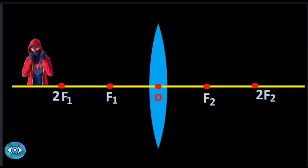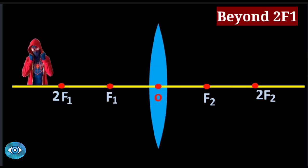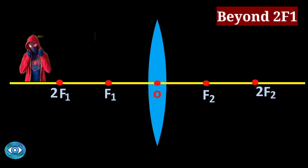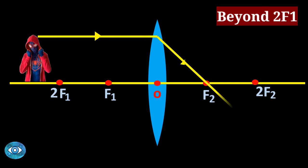Case two: the object is a Spider-Man figure placed beyond 2f1. We consider rays from the top of the object and choose any two light ray rules — let's take rule number one and rule number two.